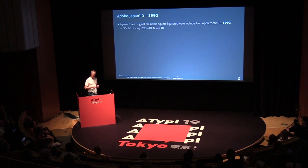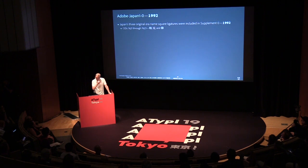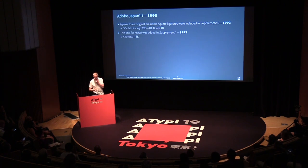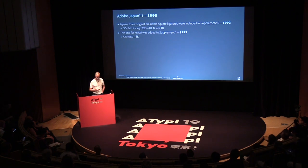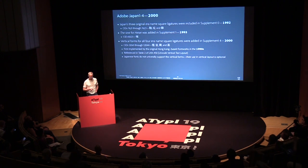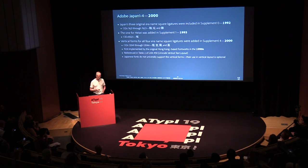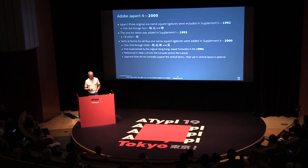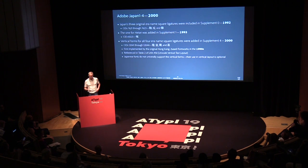Now we get to glyph set standards. In 1992 we established Adobe Japan 1.0, and the three original era-name ligatures were included at CIDs 7621 through 7623. The next addition was in 1993 with supplement one — the Heisei ligature went to CID 8323. When we worked on supplement four, which added thousands of new glyphs for Pro Japanese fonts in the year 2000, we added vertical forms of these four era-name ligatures — stacked top-to-bottom for vertical writing — at CIDs 12041 through 12044.